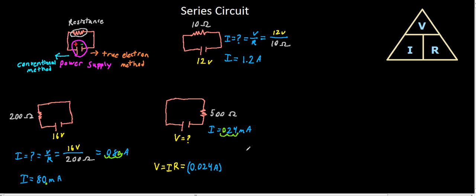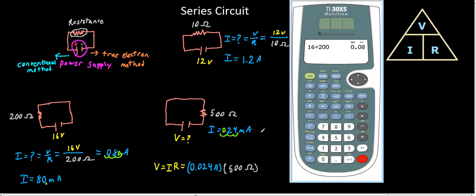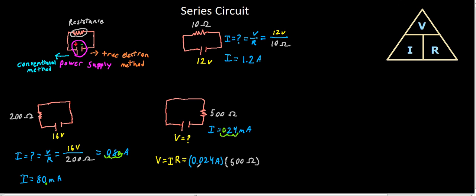And then we'll multiply this by 500 ohms. Because that's what the equation says to do. And I'm bad at math, so I'll pull out my handy dandy calculator. And we'll type this in 0.024 times 500. And what do we get? We get 12. So we get voltage equals 12 volts.